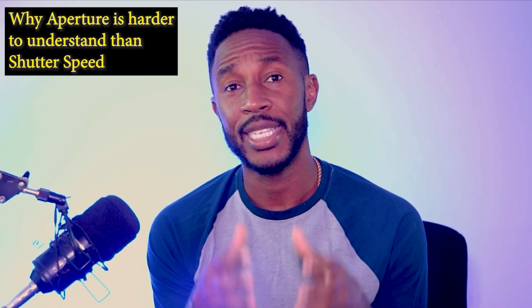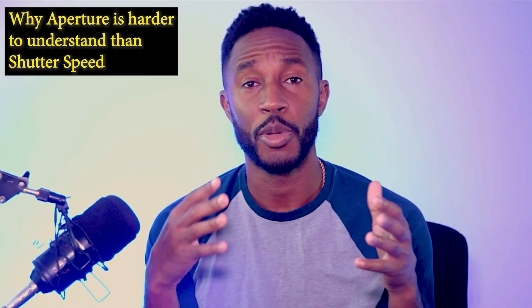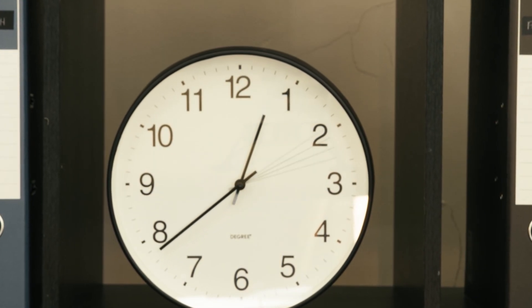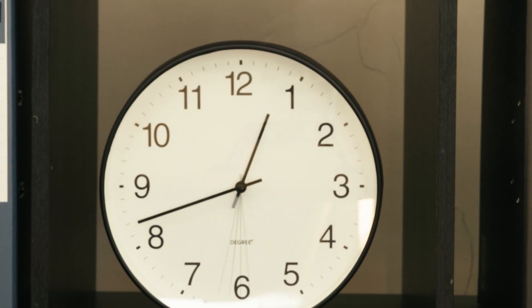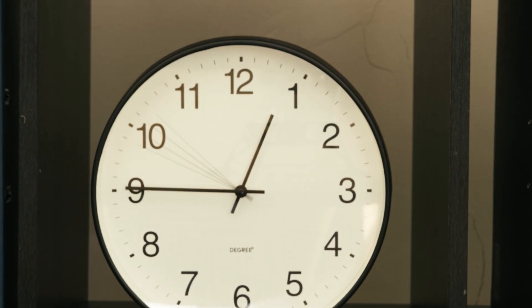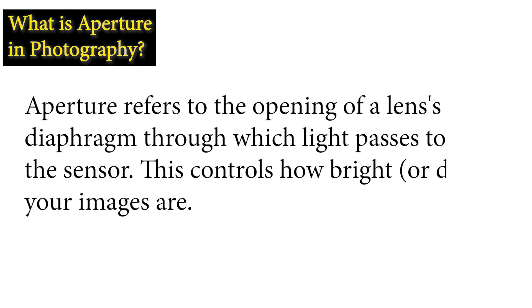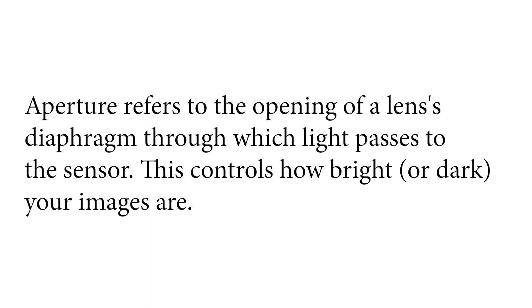While shutter speed is a fairly easy thing to understand because we're all familiar with fractions of time — minutes are fractions of an hour, 60 seconds are fractions of minutes, and it's relatable because we use time every day — aperture on the other hand is a little bit more complicated. Aperture is one of the three main settings on your camera that you can use to control how bright or dark your image is, along with your ISO and your shutter speed. Some may argue it is the most creative of the three because it allows you to drastically change the look of your photos.